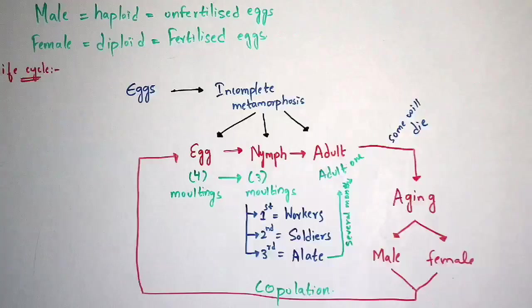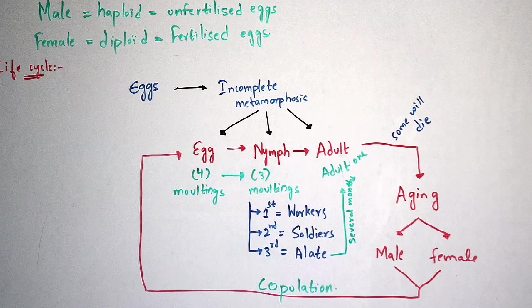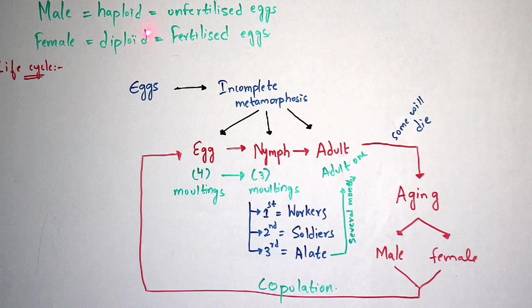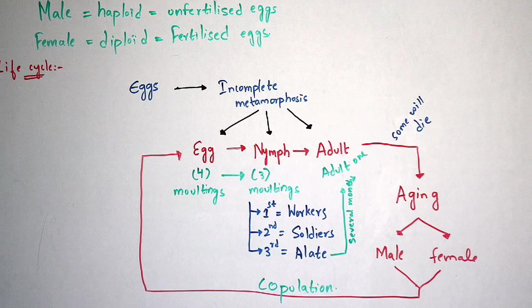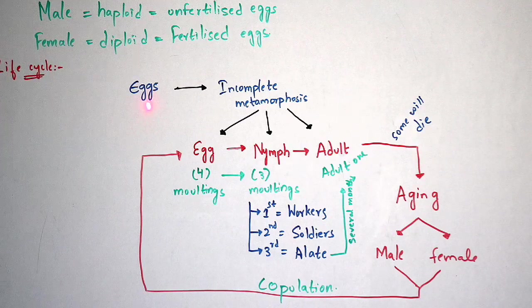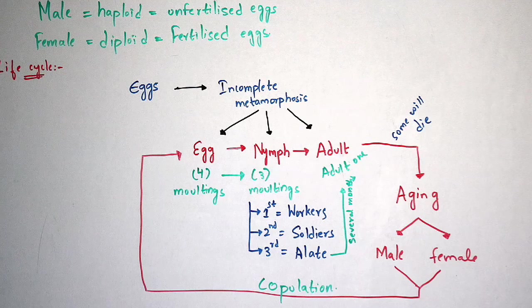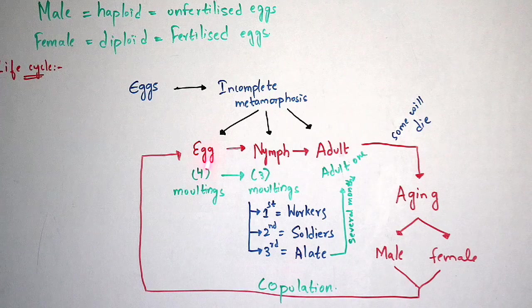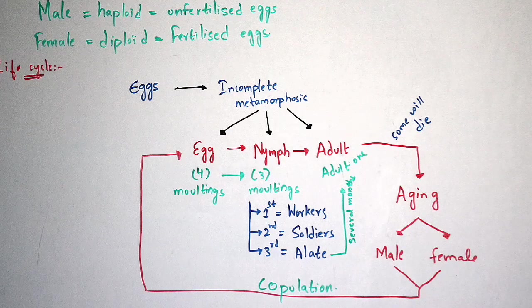Now let us see the life cycle of these termites. Before entering into the life cycle, you have to know that male termites are haploid in nature — developed from unfertilized eggs — and female termites are diploid in nature — developed from fertilized eggs. Haploid consists of a single set of unpaired chromosomes, while diploid consists of paired chromosomes obtained from the parents. Each life cycle of insects begins from the egg. This egg undergoes incomplete metamorphosis, which has three stages: egg (initial stage), nymph (intermediate stage), and adult (final stage).